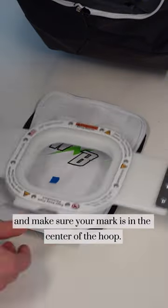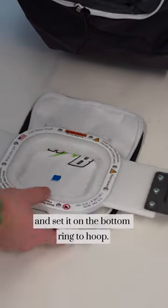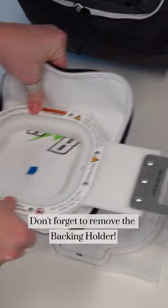To hoop the pocket, grab the top ring of the four and a quarter inch mighty hoop and make sure your mark is in the center of the hoop. Then hold that in place and set it on the bottom ring to hoop. Don't forget to remove the backing holder.